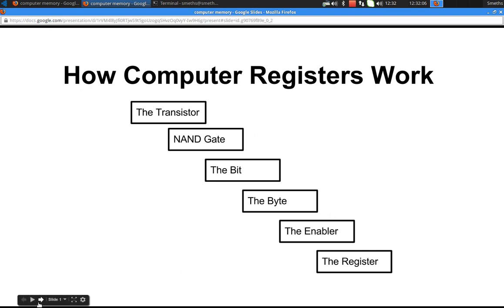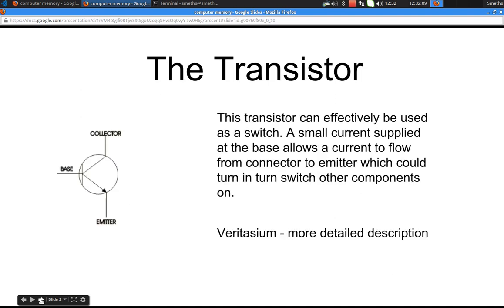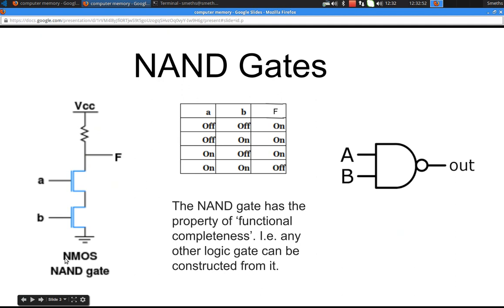The first thing we're going to look at is the transistor. I'm not going to explain exactly how a transistor works, I'm just going to explain how it functions. If you want more information on that, you can look up this person's channel — he's got a very good explanation of how silicon, semiconductors, etc., allow for a transistor to be made. So you've got an emitter, a collector, and a base, and effectively it's like a switch. If you supply a voltage to the base, you allow a current to flow from the emitter to the collector.